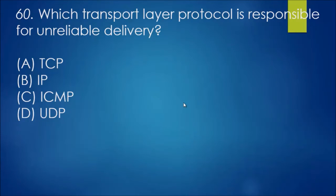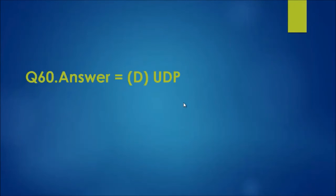Question 60: Which transport layer protocol is responsible for unreliable delivery? UDP is the correct answer for this one. They don't actually track whether or not things reached its destination. It's kind of like receiving a mail letter without actually knowing about it.